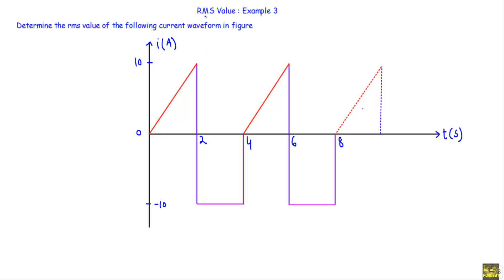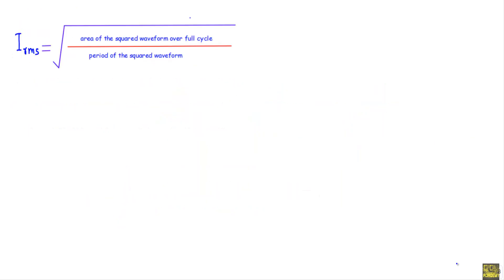In this video I will show you another example of RMS value. This is the last example: determine the RMS value of the following current waveform in the figure. From this waveform we have to calculate the RMS value of the current. We use this formula: root over area of the squared waveform over full cycle, divided by the period. To calculate the RMS value we will follow these five steps.